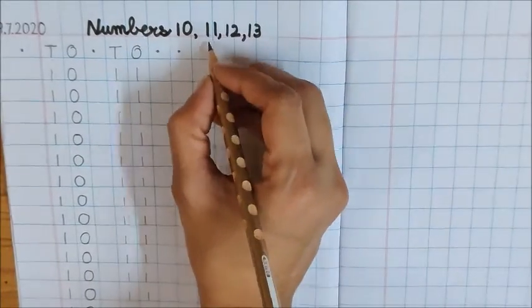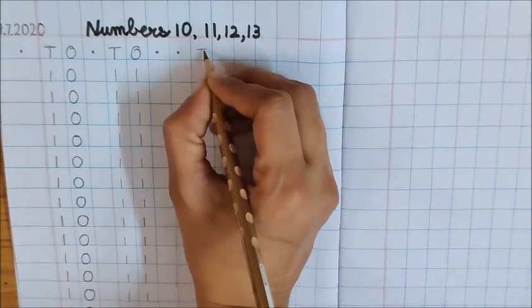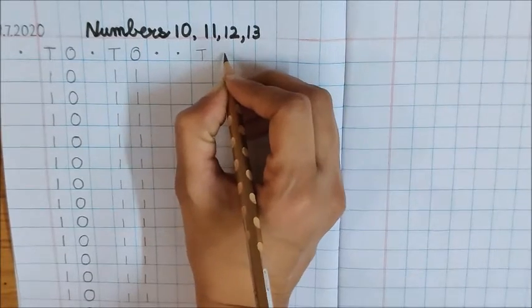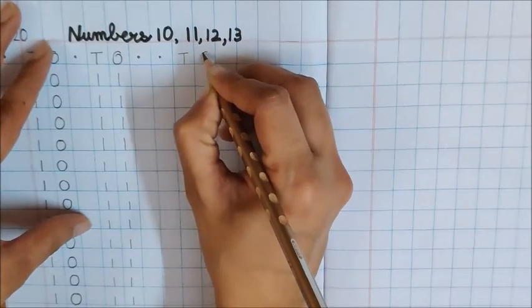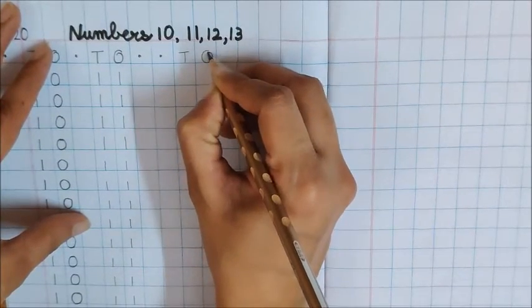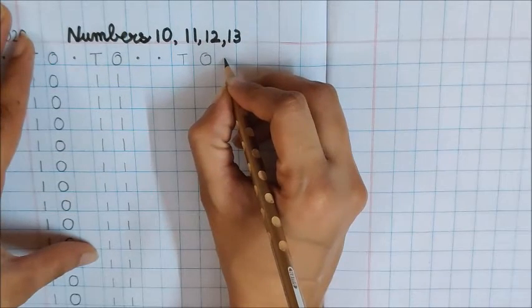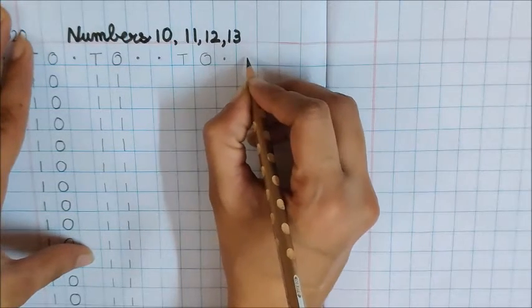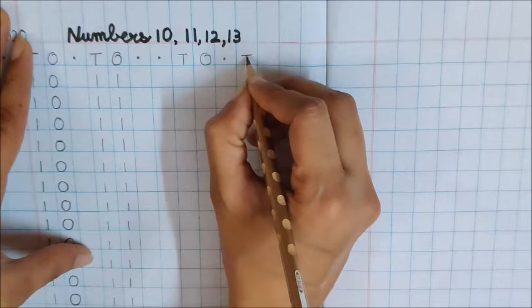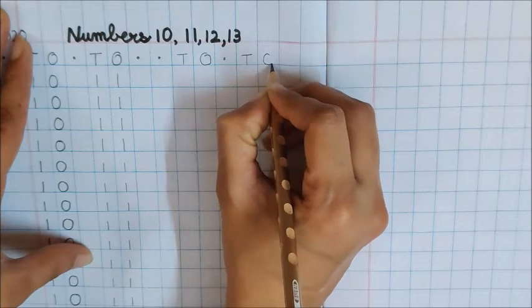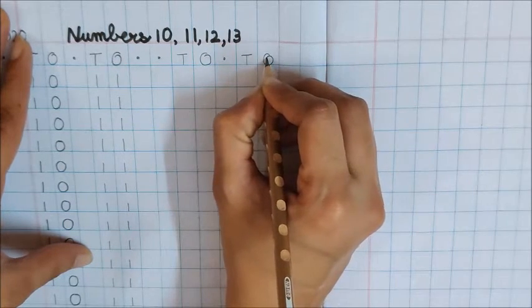After this dot, write in the next box T and in this box, write down O. Now again, put dot here. Then in the next box, write down T. And here, we will write down O.